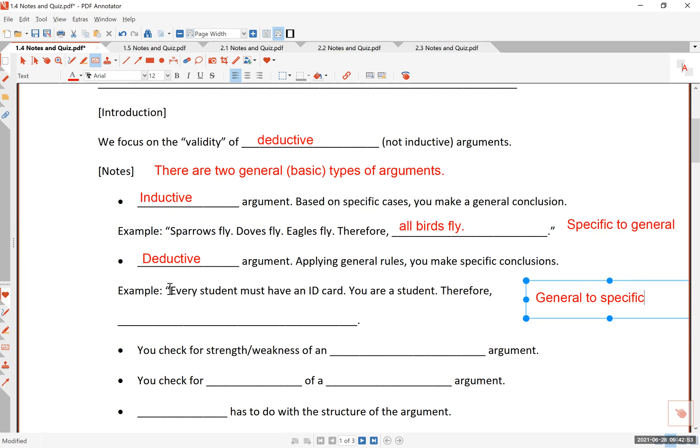Here's an example. Every student must have an ID card. That is a general rule. You, in particular, a specific instance. You are a student that is a very specific person, and therefore, what's the conclusion? And I think you can fill this in. Every student must have an ID card. You are a student, and therefore, the conclusion seems to be a pretty easy one. You must have an ID card.